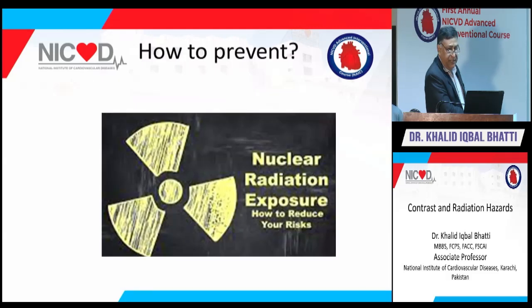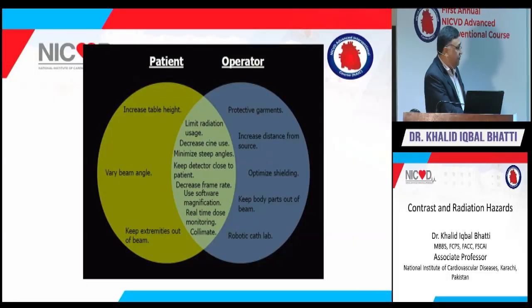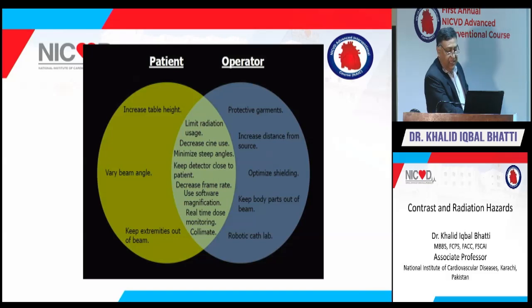To protect patients, increase table height, vary the beam angle, and keep extremities out of the beam. For operators, wear protective garments, increase distance from the radiation source, optimize shielding, and keep body parts out of the beam. The cath lab should ideally be robotic. General measures include limiting radiation usage, decreasing steep angles, keeping the detector close to the patient, and decreasing frame rate.